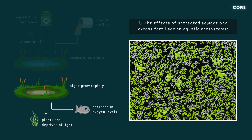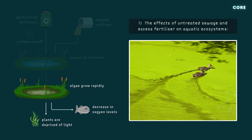The algae grow rapidly, preventing light from reaching the plants below, and causing oxygen levels to fall. Plants are unable to photosynthesise, fish can't breathe, and the entire ecosystem collapses.